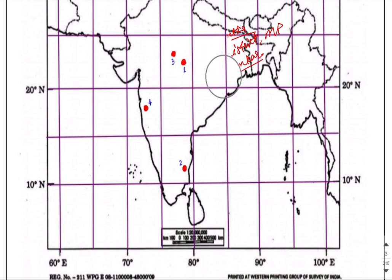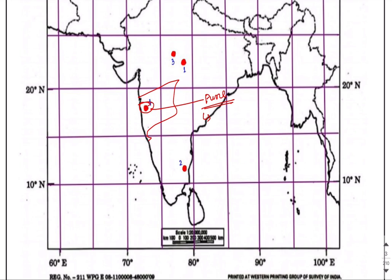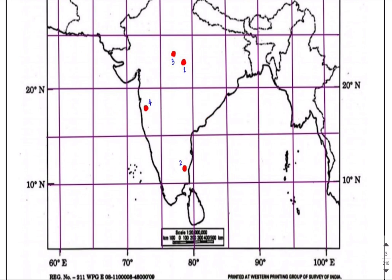The fourth site is in Maharashtra. Here you can see this is Maharashtra, and the site is Pune. Here also, some skeleton of human beings - hominids - has been found. Pune is present in Pune district of Maharashtra. The adult male skull was found there by H.D. Sankalia. So, the four hominid fossil sites are: first - Hathnora, second - Udai, third - Bhimbetka, and fourth - Pune.